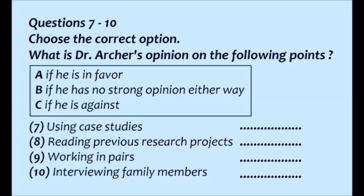I've looked over some previous research projects that are in the library. Is that a good idea? I don't think you should go through them in detail, especially at this early stage, or you might end up being influenced by them more than you realise. But yes, it really is about the best guide you can have to what's expected in this type of project. It's just that I noticed one project was a joint one — they worked together as a pair. Is that a good idea? Working in a pair can have some advantages, but to be frank, this is meant to be an individual project, so it's best to work on your own.